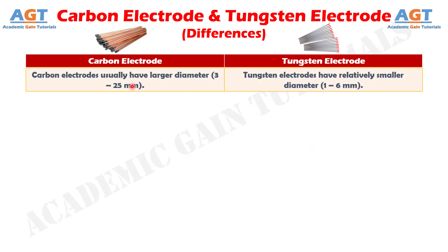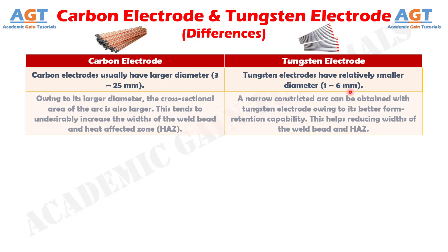No. 7: Carbon electrodes usually have a larger diameter, from 3 to 25 mm, whereas tungsten electrodes have a relatively smaller diameter, from 1 to 6 mm. No. 8: Owing to the larger diameter of carbon electrodes, the cross-sectional area of the arc is also larger. This tends to undesirably increase the widths of the weld bead and heat affected zone, whereas a narrow constricted arc can be obtained with tungsten electrodes owing to their better form retention capability, helping reduce the widths of the weld bead and heat affected zone.